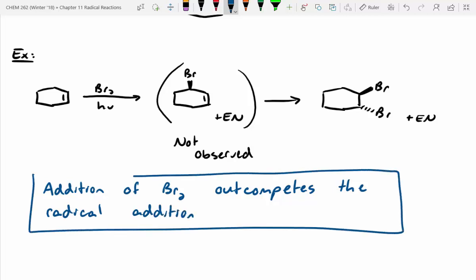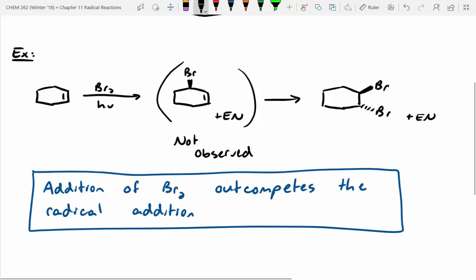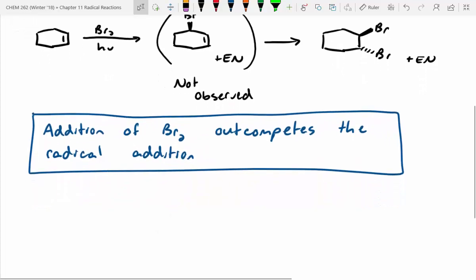And this was a problem. However, chemists are clever people, and they like to find solutions. So then the question is, how can we minimize the amount of Br2 in solution? We don't want anti-addition of bromine. We want to brominate the allylic position. So we really need to focus on minimizing the amount of Br2 in solution. And in order to do this, they actually developed an alternate reagent.